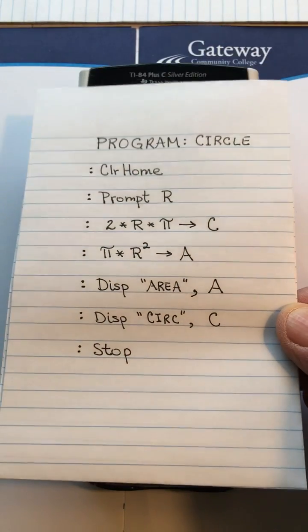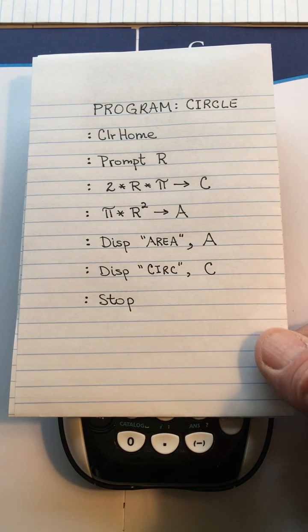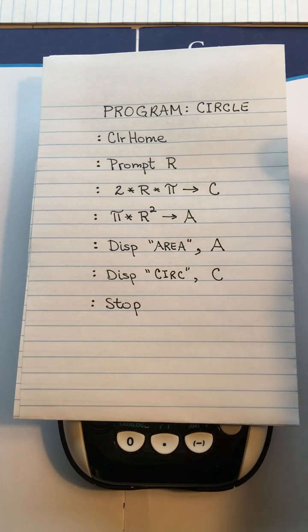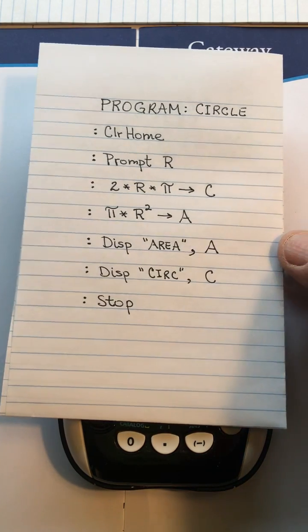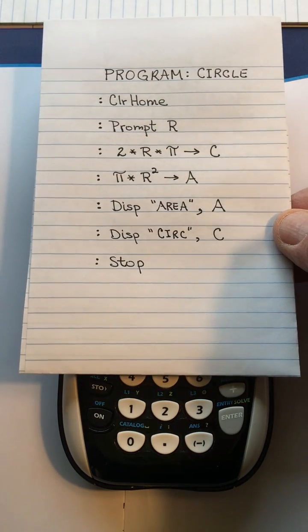Hi. We're going to write programs or applications inside the TI-84 or TI-83. They're pretty much the same, the calculator. We're going to write a program for a circle to calculate the circumference and area and then display it when you enter the radius.